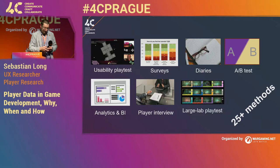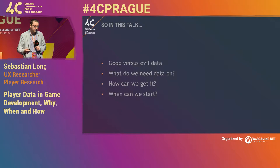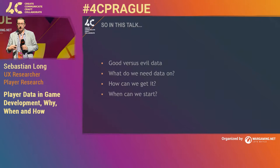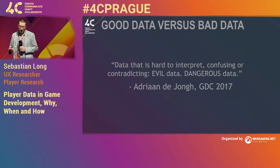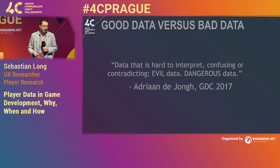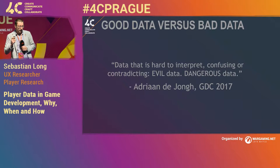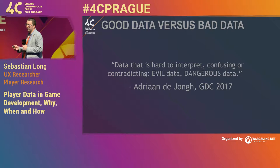In this talk, I want to start with good versus bad data — what we need data on, how we get it, and when we can start. Before talking about ways of getting data, I want to focus on what good data looks like. Because if we're bringing bad, unreliable data into our company, there's a risk of making our games worse. Not all data is created equal. As Adrian, the creator of Fingal and Hidden Folks, put it in his GDC talk: data that is hard to interpret, confusing or contradicting — that is evil data. That is dangerous data. The biggest mistake is thinking every data point has meaning inherent to it. You have to make meaning from data.